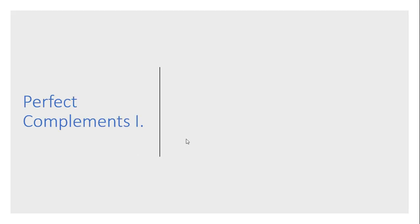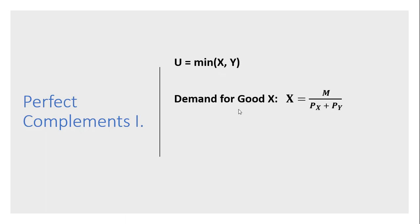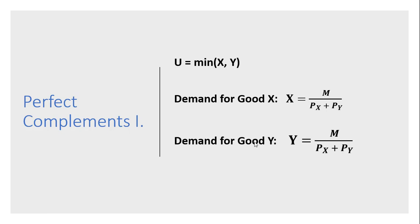Moving on to perfect complements. Utility is the minimum of x or y. The demand for good x in this case will look like this, and the demand for good y will equal the following.